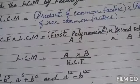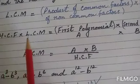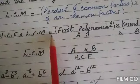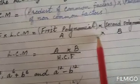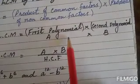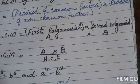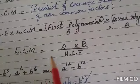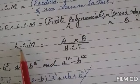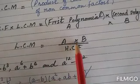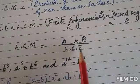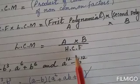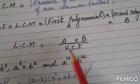If we multiply the product of common and non-common factors, and then multiply the highest common factor and LCM, it equals the first polynomial times the second polynomial. So, the first polynomial times the second polynomial equals the HCF times the LCM. Therefore, LCM equals the first polynomial times the second polynomial divided by the HCF — that is, A times B divided by HCF. Now we start the exercise.